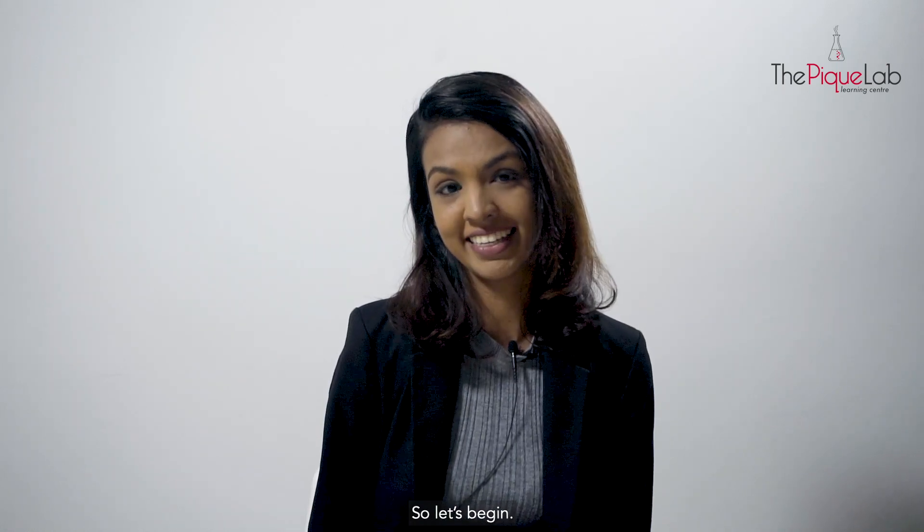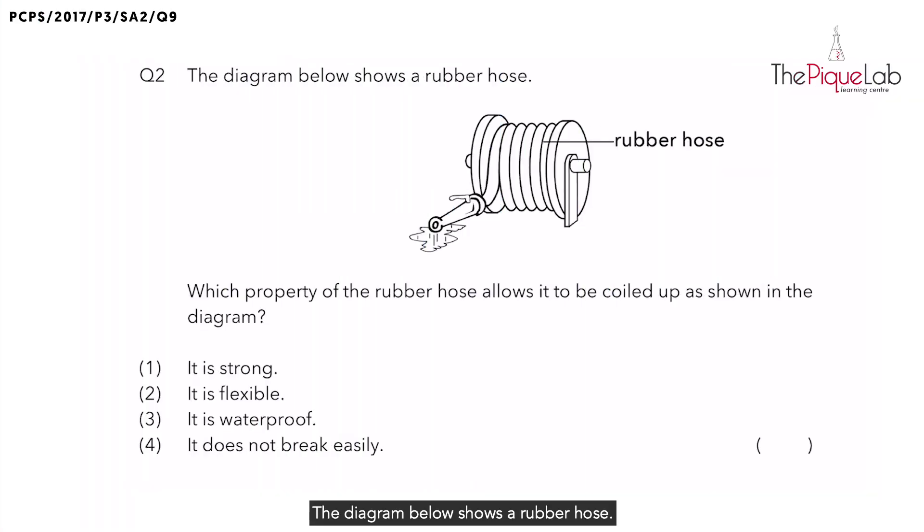So let's begin. The diagram below shows a rubber hose. Which property of the rubber hose allows it to be coiled up as shown in the diagram?